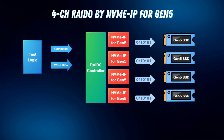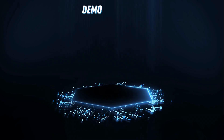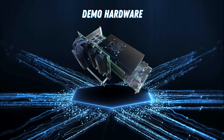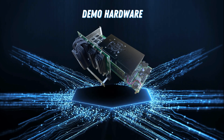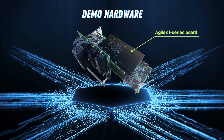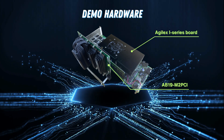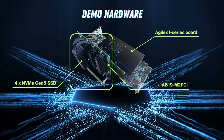Our RAID 0 configuration reaches an impressive 40,000 MB per second. To operate the 4-channel RAID 0 demo utilizing the NVMe IP for Gen 5, three components are required: the Agilex i-Series board, the AB19M2P-CI adapter board, and 4 NVMe Gen 5 SSDs.